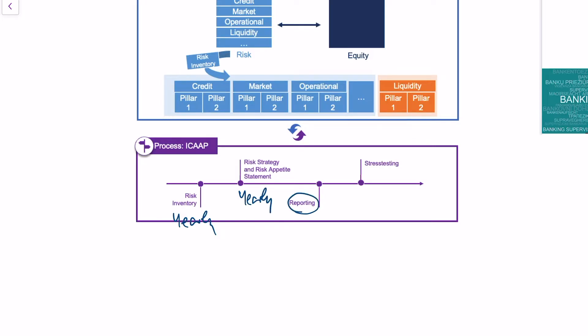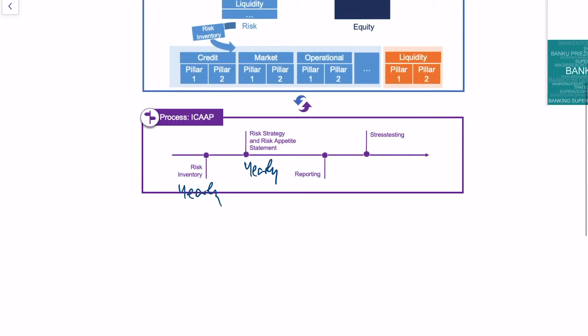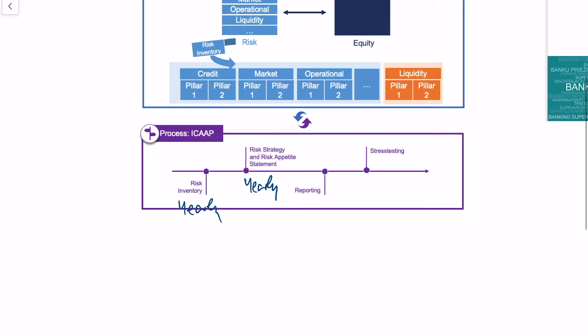I also need to do reporting. Reporting just means that I communicate the results that I obtain within my risk management. So if I see a problem in credit risk, then I need to report this to the people who actually can make decisions and can counter the risk. There's daily reporting, there's quarterly reporting, and there's also yearly reporting, and all of those reports are more or less comprehensive and more or less detailed.